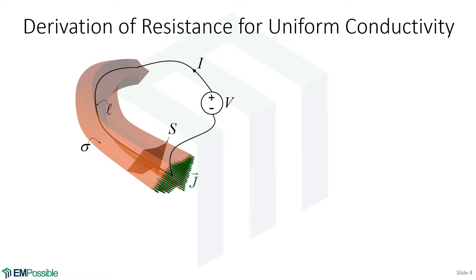So let's do a derivation of the resistance when this has uniform conductivity. We start with Ohm's law. So the electric current density is the conductivity times the electric field intensity. Well, the electric field intensity is the applied voltage divided by the length of the resistor.